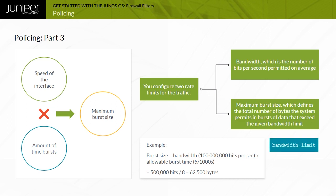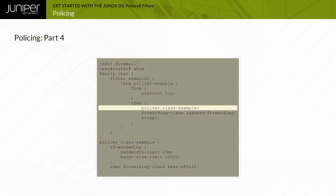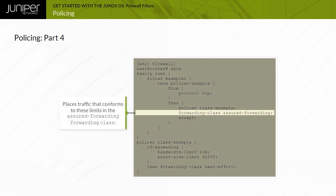You can specify the bandwidth as a number of bits using the bandwidth limit statement, and the maximum burst size as a number of bytes using the burst size limit statement. When a packet matches a term that has a policer in the then clause, the system first determines if the packet exceeds the policer. If the packet does not exceed the policer, the system performs the actions in the firewall filter's then clause as if the policer were absent.